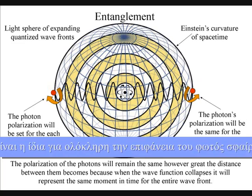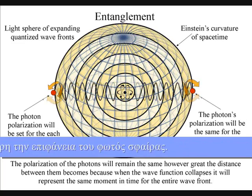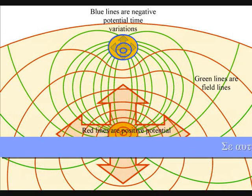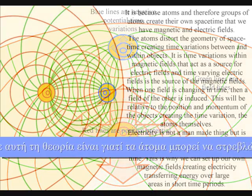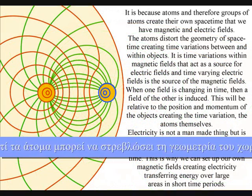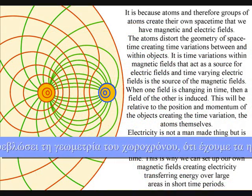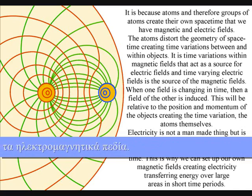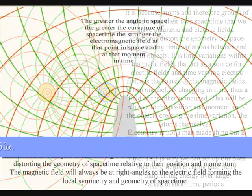In this theory, it is because the atoms can distort the geometry of space and time that we have electromagnetic fields. It is time variations within magnetic fields that act as the source for electric fields, and time varying electric fields is the source of the magnetic fields. When one field is changing in time, then a field of the other is induced.